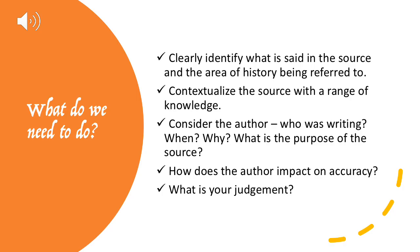In a nutshell, here's what we need to do: clearly identify what is being said in the source and the area of history being referred to; contextualise the source with a range of knowledge and lots of examples; consider the author — who was writing, when, why, what is the purpose, how does the author impact accuracy? Our guy is writing nearly 30 years after Elizabeth died, so he's not necessarily going to be that accurate. And finally, what is your judgment?